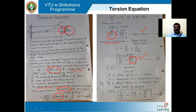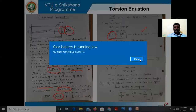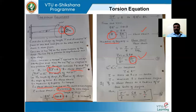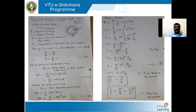To find the shear stress at any radius small r from the center, the relation from equation 3 becomes: tau by R equals G theta by L equals q by r, where q is the shear stress at radius small r. This gives us one important relation linking shear stress, radius, modulus of rigidity, angle of twist, and length.